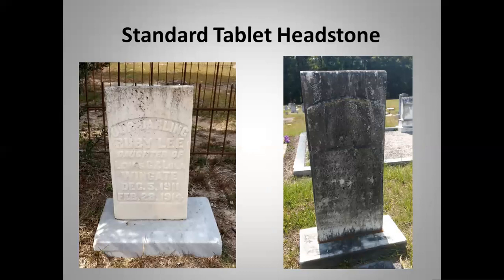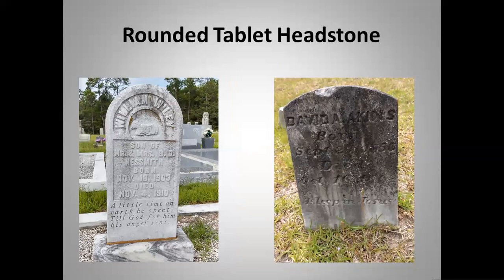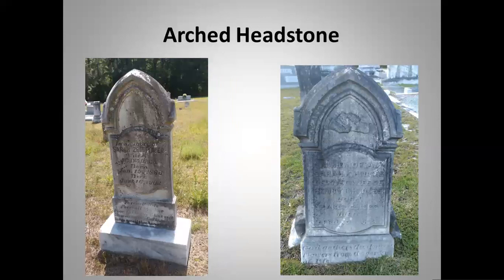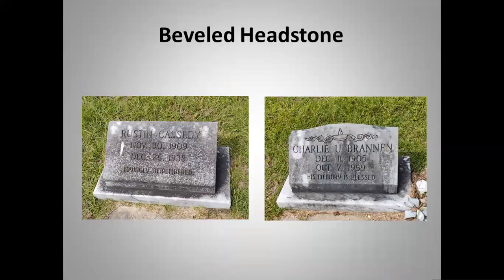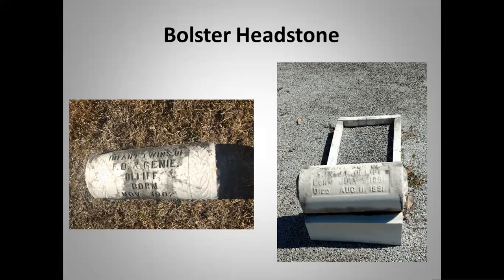A standard tablet stone is upright with 90-degree angles and flat at the top. Rounded tablet stones simply have a rounded top. Arched headstones are more ornate. A beveled headstone, also sometimes called a slant, is not flat — it rises up with the back higher than the bottom, usually close to a 45-degree angle. Bolster headstones are a cylinder-type stone on its side where it is carved — somewhat popular for a while but hard to keep in place, and grass or ground can cover the inscription.